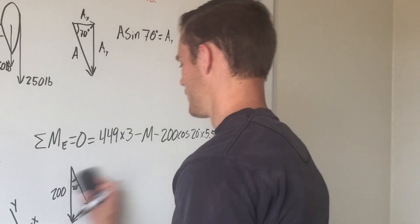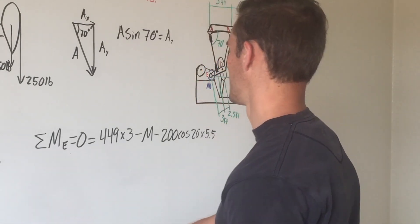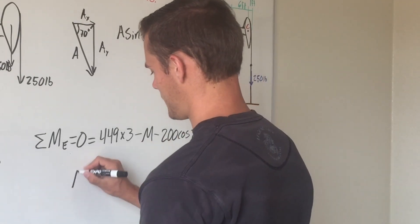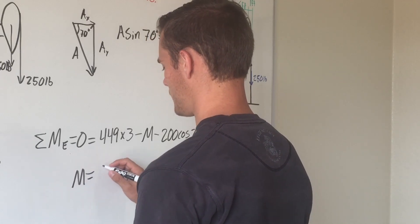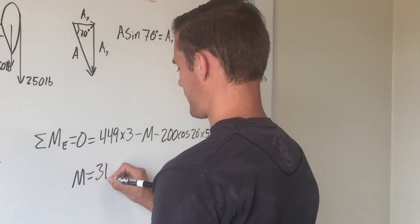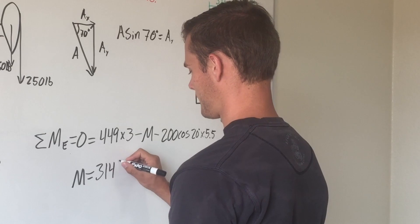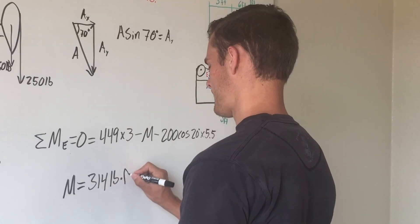Multiply all those together, add the M over to the other side, and you get M equals 314 pound-feet.